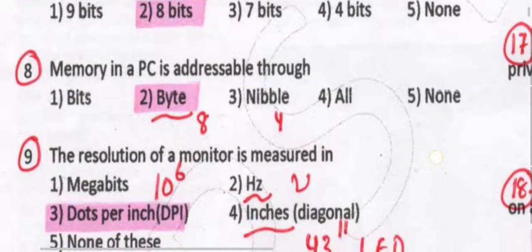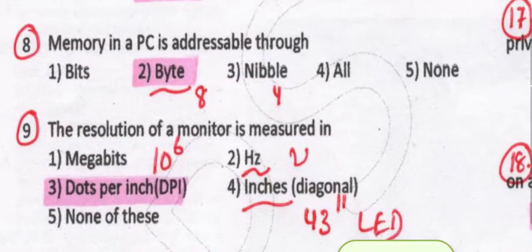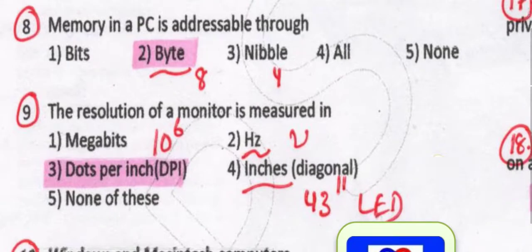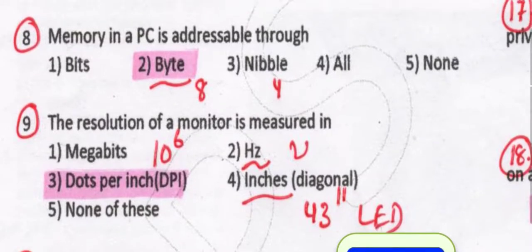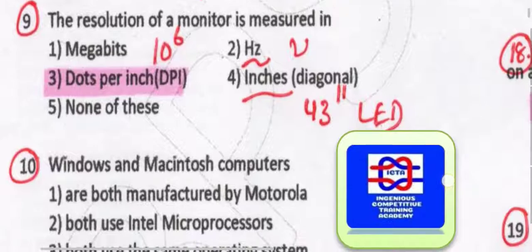Memory in a PC is addressable through the byte. The resolution of a monitor is measured in dots per inch — DPI. Whatever the monitor's resolution, it is measured in dots per inch (DPI). If we talk about a printer, it is prints per inch or prints per page. Dots per inch is measured in the monitor's resolution.